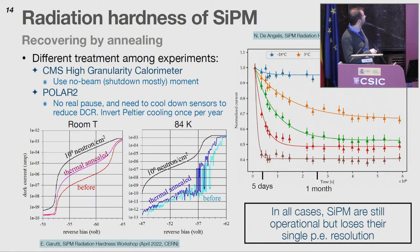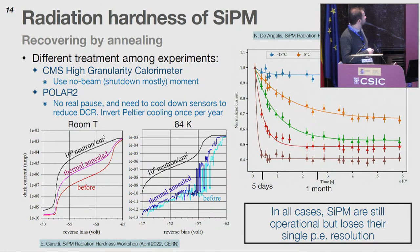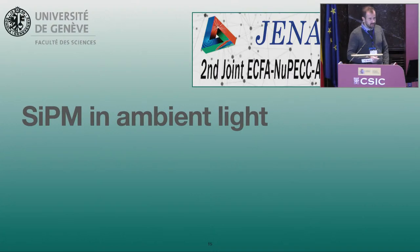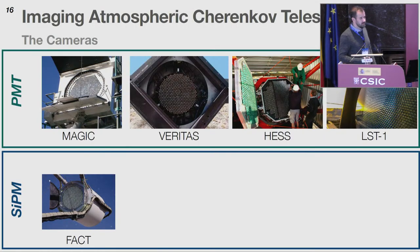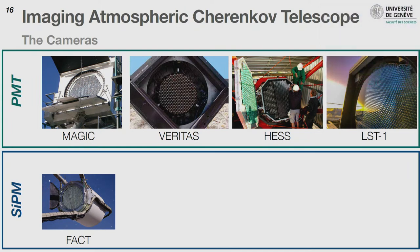Annealing is not always easy to achieve: for collider experiments you anneal during beam-off periods, but in space you don't control temperature. For the Polar-2 detector, one idea is to invert the Peltier cooling elements to increase temperature and anneal once per year. Ambient light is also a harsh environment for SiPMs, particularly in imaging atmospheric Cherenkov telescopes, where PMTs were widely used mainly due to their quantum efficiency. Here you see the large-size telescope prototype at La Palma and one of its SiPM-based precursors.